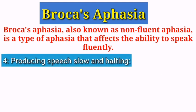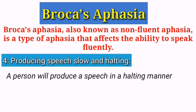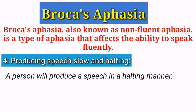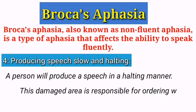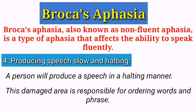Another symptom is producing speech that is slow and halting, which is a common symptom of Broca's aphasia. There are a number of reasons why this occurs. One reason is that the person may have difficulty planning the structure of sentences, because Broca's area is involved in planning the order of words and phrases in a sentence.